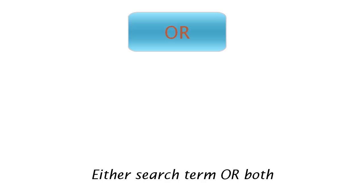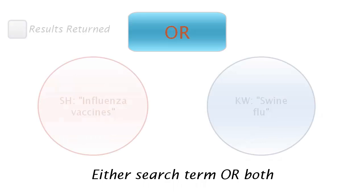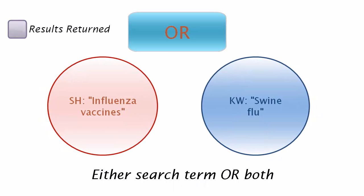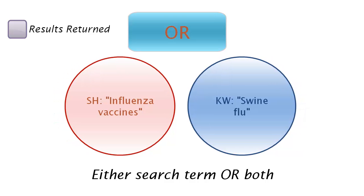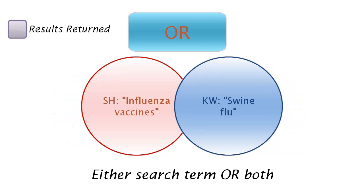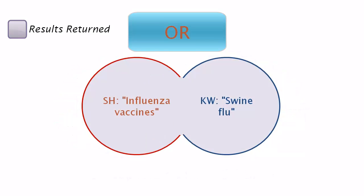Typically, your combination options are AND and OR. Combine search terms using OR when you want to find articles that include either search term as well as those that contain both. This can help us construct a complex concept like flu shots by searching for articles containing the subject heading influenza vaccines or the keyword swine flu.